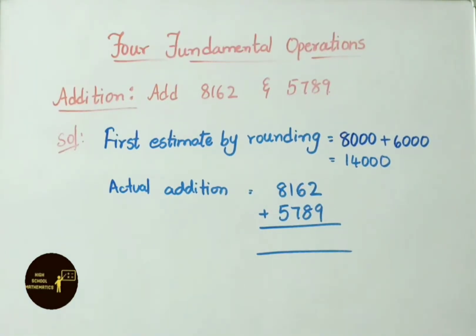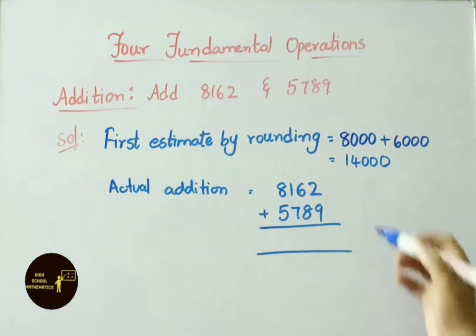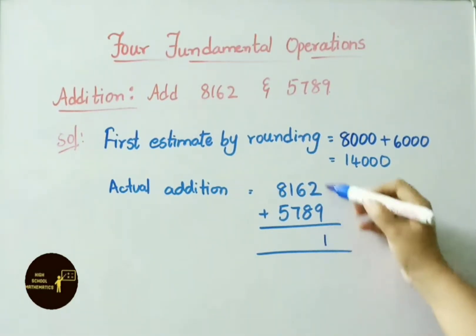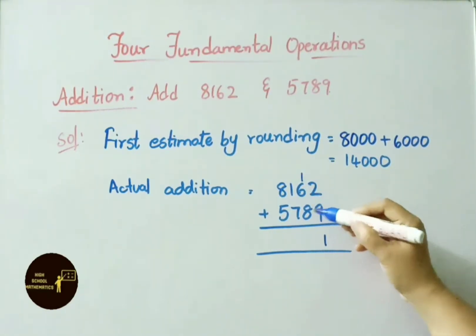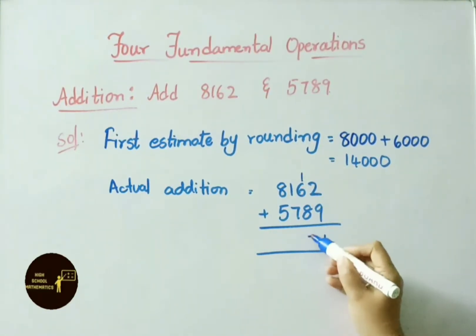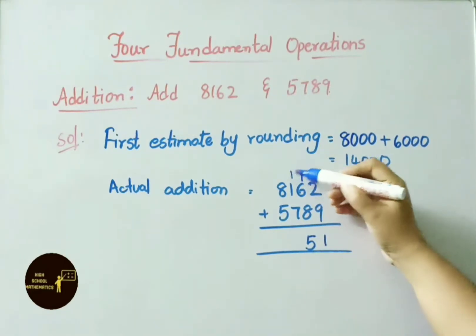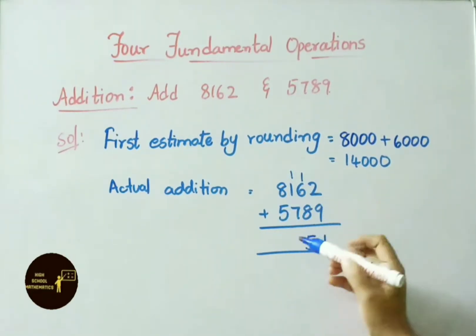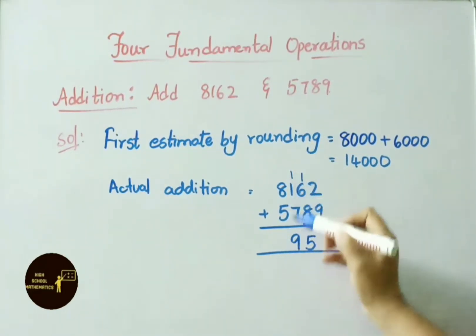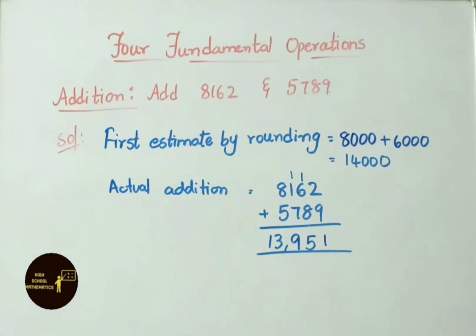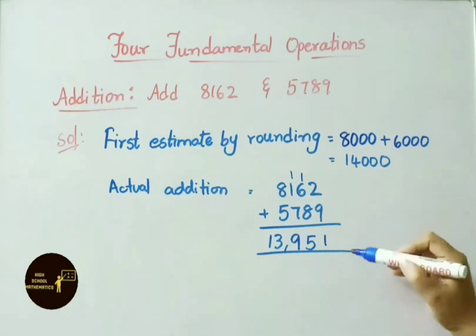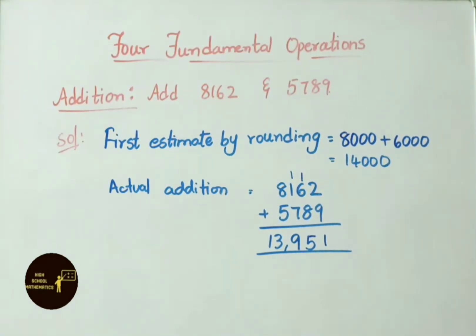Now let us do actual addition of 8,162 plus 5,789. 2 plus 9 is 11, write 1 carry 1. 1 plus 6 is 7, then 7 plus 8 is 15, write 5 carry 1. 1 plus 1 is 2, then 2 plus 7 is 9, and 8 plus 5 is 13. Actual answer is 13,951. Our estimation value is 14,000 — these two are nearer values.